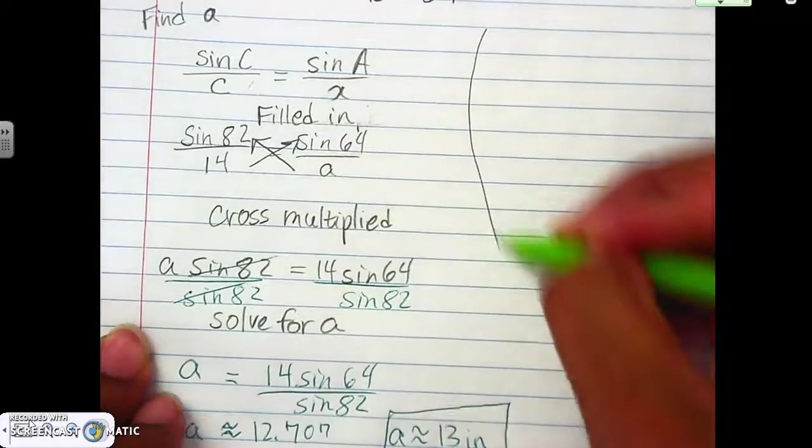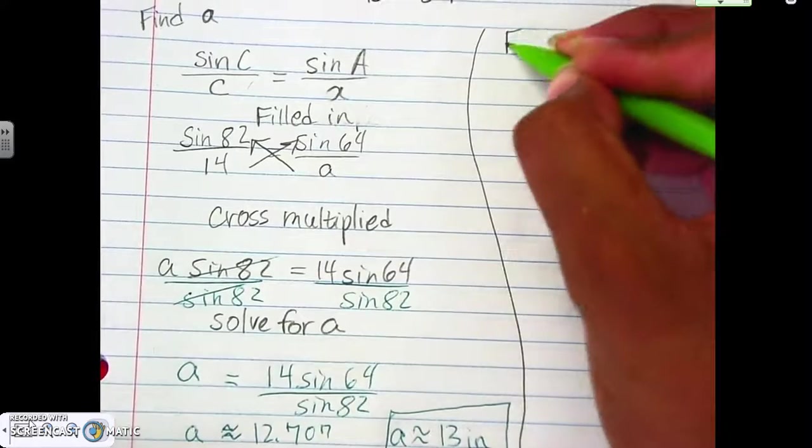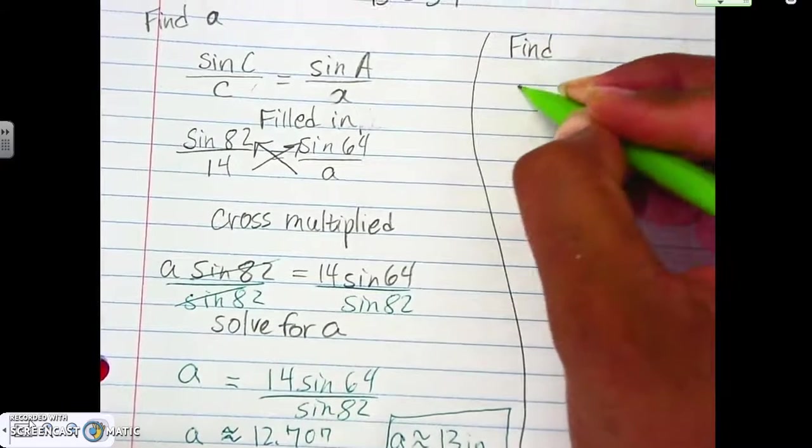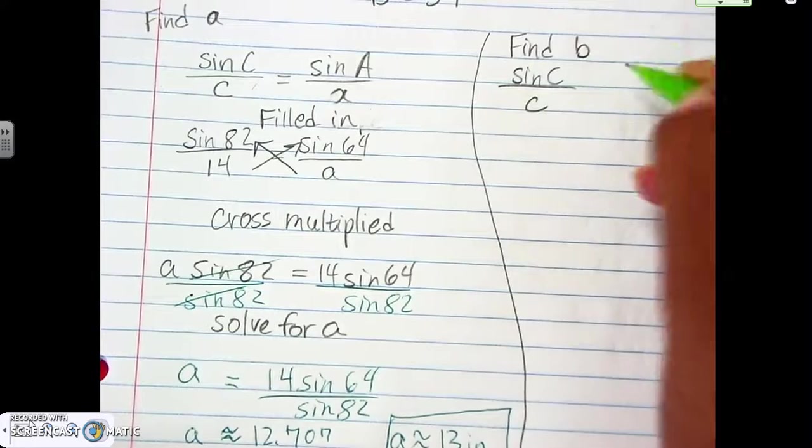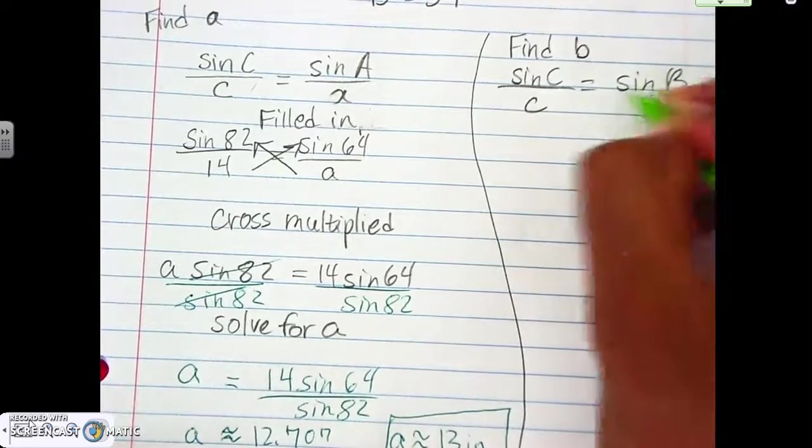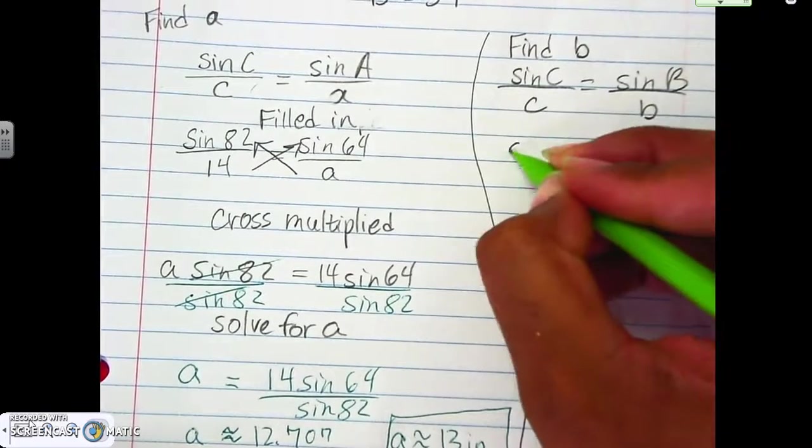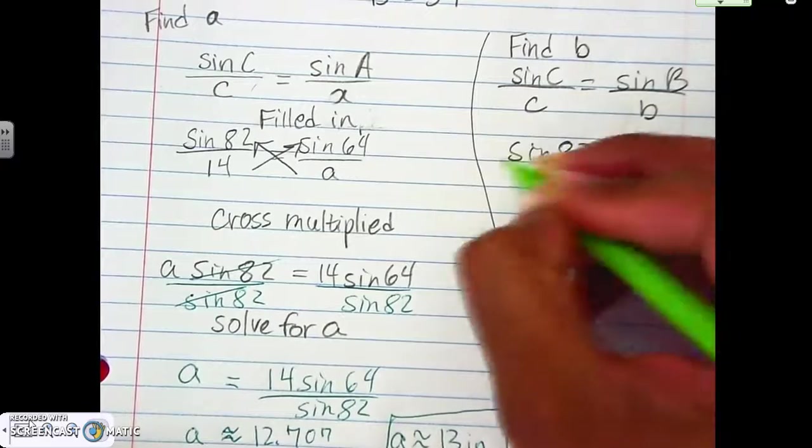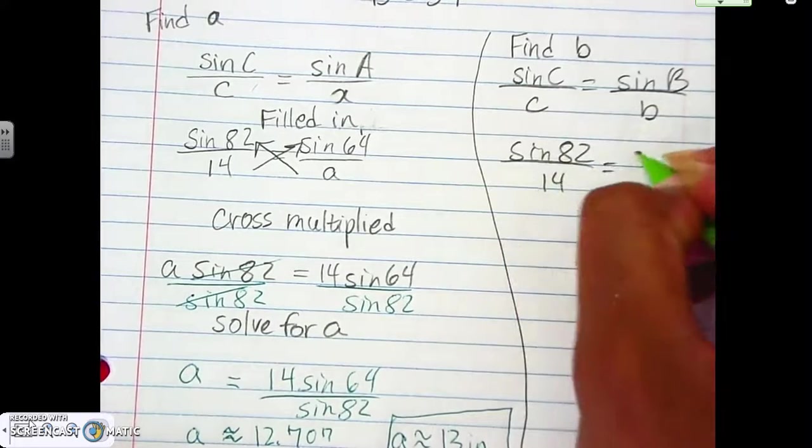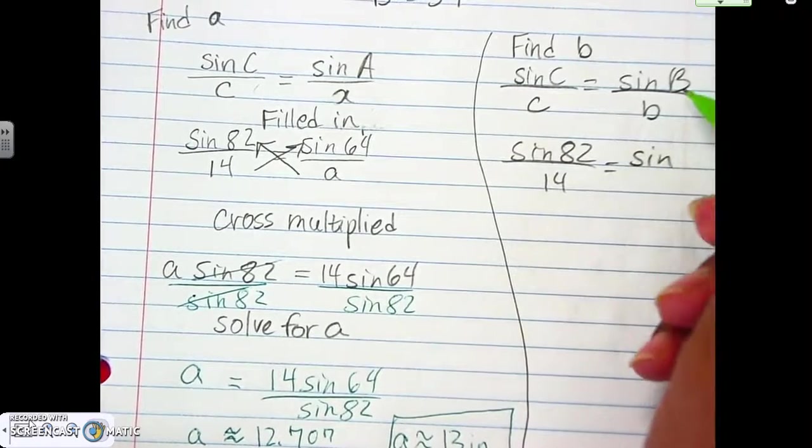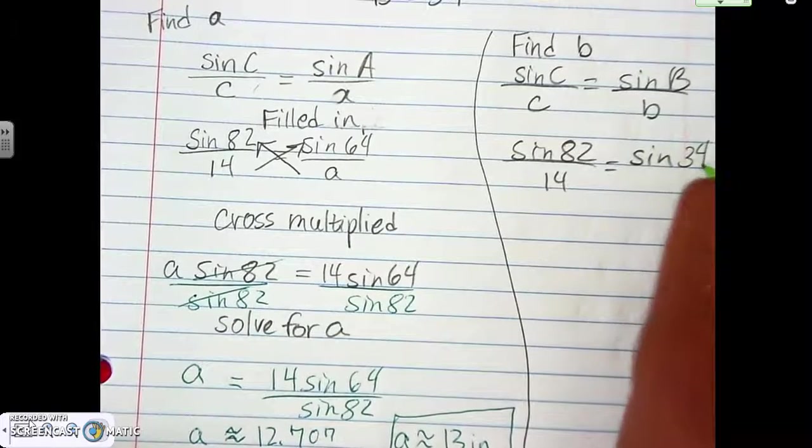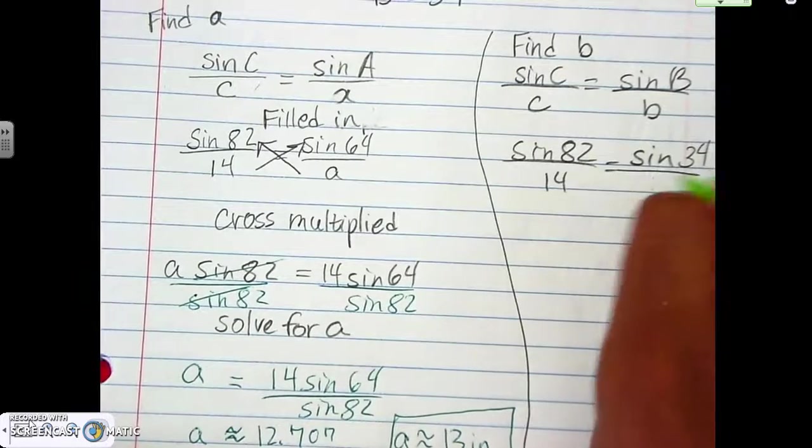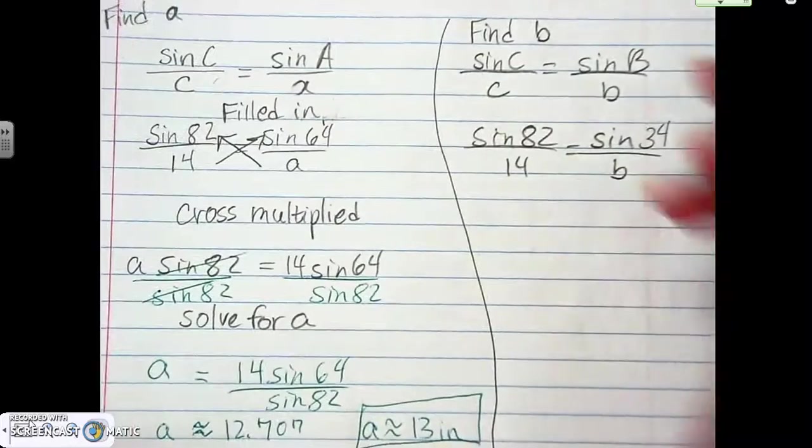All right. And then let's go ahead and find B. And again, here, we use our C's because they gave us both C's. So I find B, sorry. So sine B over B. So the numbers in. And here, angle B we set was 34. That's what we found earlier. So we fill that in and put B there. So we filled it in again.